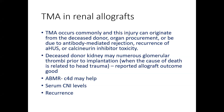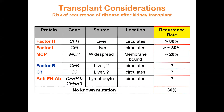One should also be aware that TMA can recur in the allograft, particularly in cases of atypical hemolytic uremic syndrome. The recurrence rate in complement-mediated TMA is high — around 80% in factor H mutation-related TMA, and similar rates for factor I-related TMA. In membrane cofactor protein mutation (MCP/CD46), recurrence occurs in only about 20% of cases because MCP is a membrane-bound regulator expressed on the transplanted kidney. Recurrence rates for other genetic mutations are not well documented.